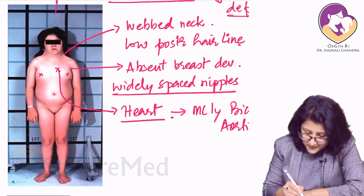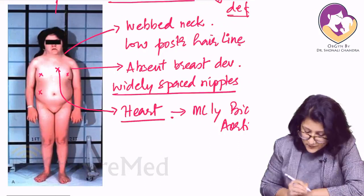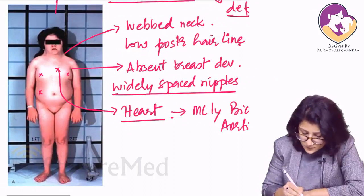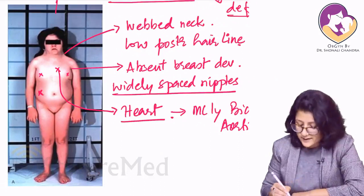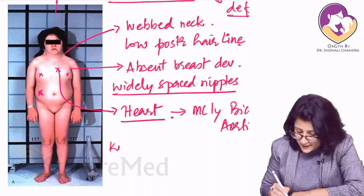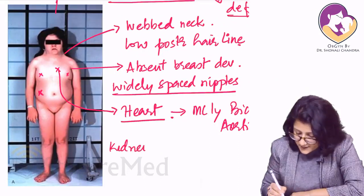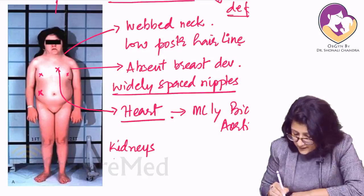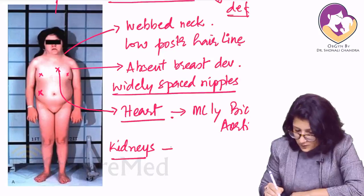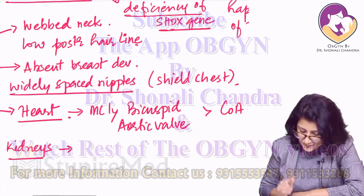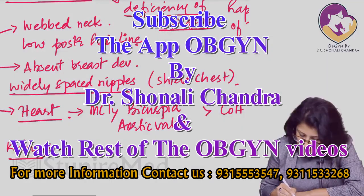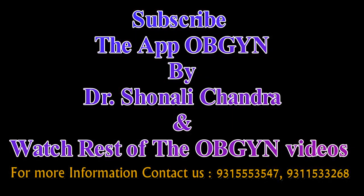Coming to the kidneys, there are renal anomalies associated with Turner syndrome, and horseshoe kidney is among the most commonly noted renal anomalies.